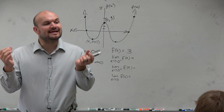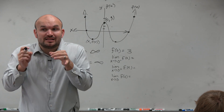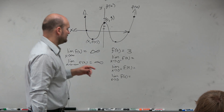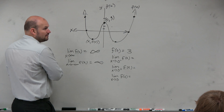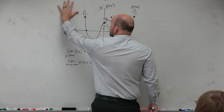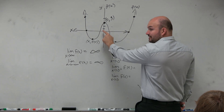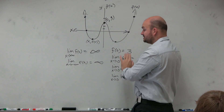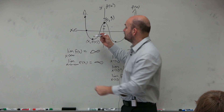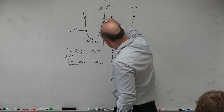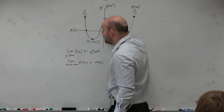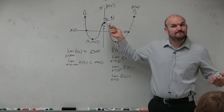The limit says: what is the value that you are approaching as you're getting really, really close? This is the value of the function at 0 — that's not what we're asking with limits. The limit from the left means, from your left hand, as x gets really, really close to 0, what f of x value are you approaching? Follow my left hand getting really, really close — closer, closer, closer. So as I get really, really close to 0, what f of x value am I approaching? 3.